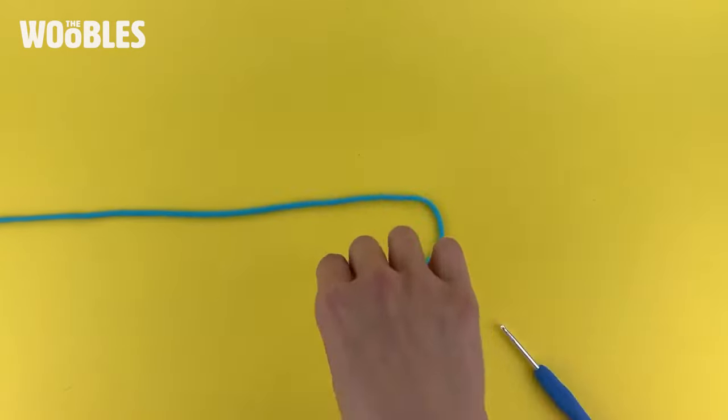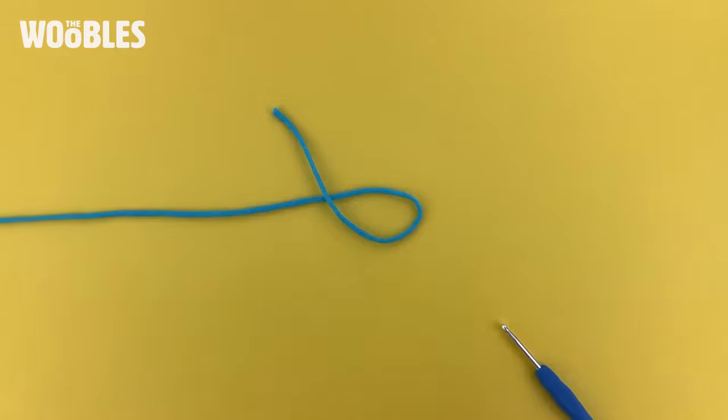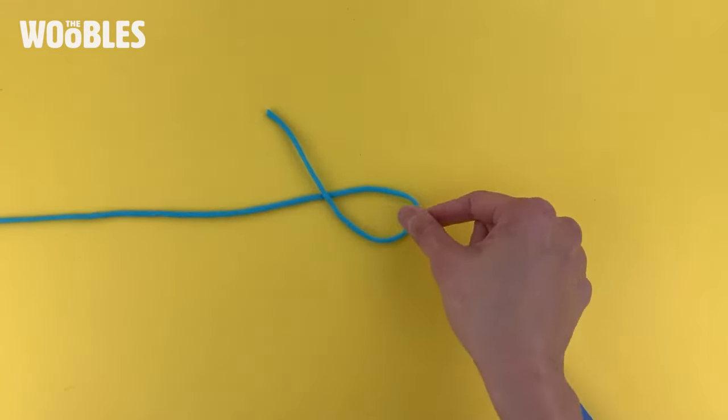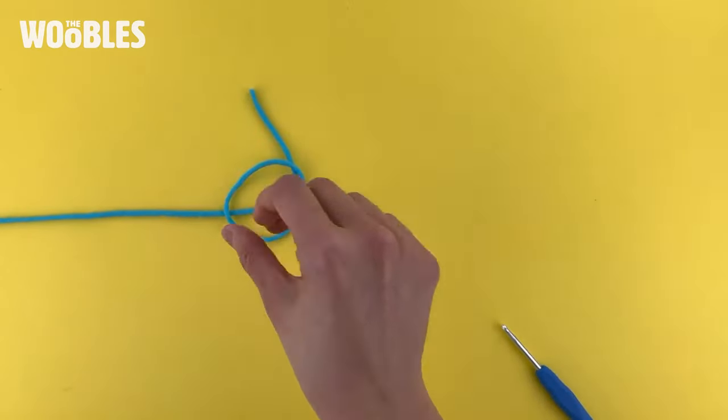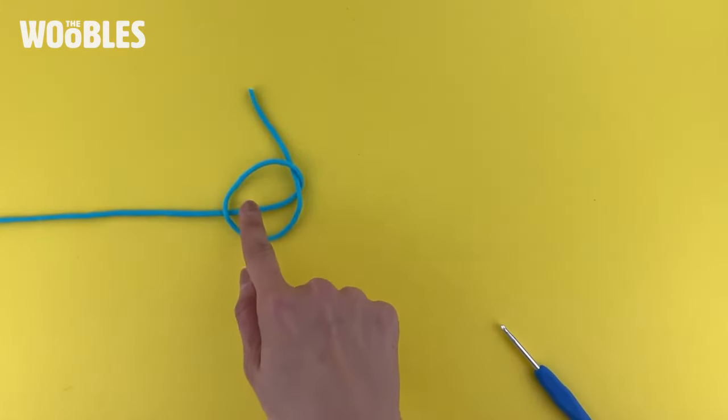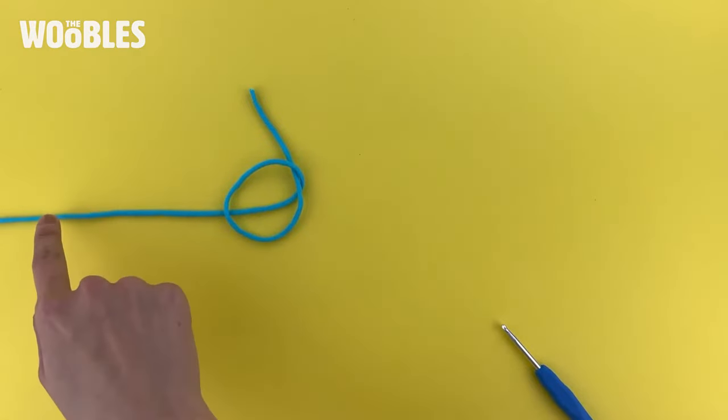Then pick that up and loop it once over the rest of the yarn so that there's one intersection point. Then pick up the right edge of the loop you just made and flip it over so now the loop is on top of the rest of the yarn connected to the yarn ball.